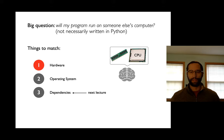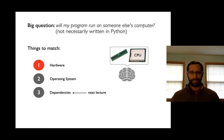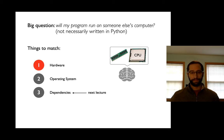The big question today: will my program run on somebody else's computer and produce the same results? We're going to start very general — not even assuming the program is written in Python. For this to work, a few things have to match: the hardware, and the operating system. What if I'm running on Windows and you have a Mac? I'm going to talk about both those things today, and next lecture we'll talk about dependencies.